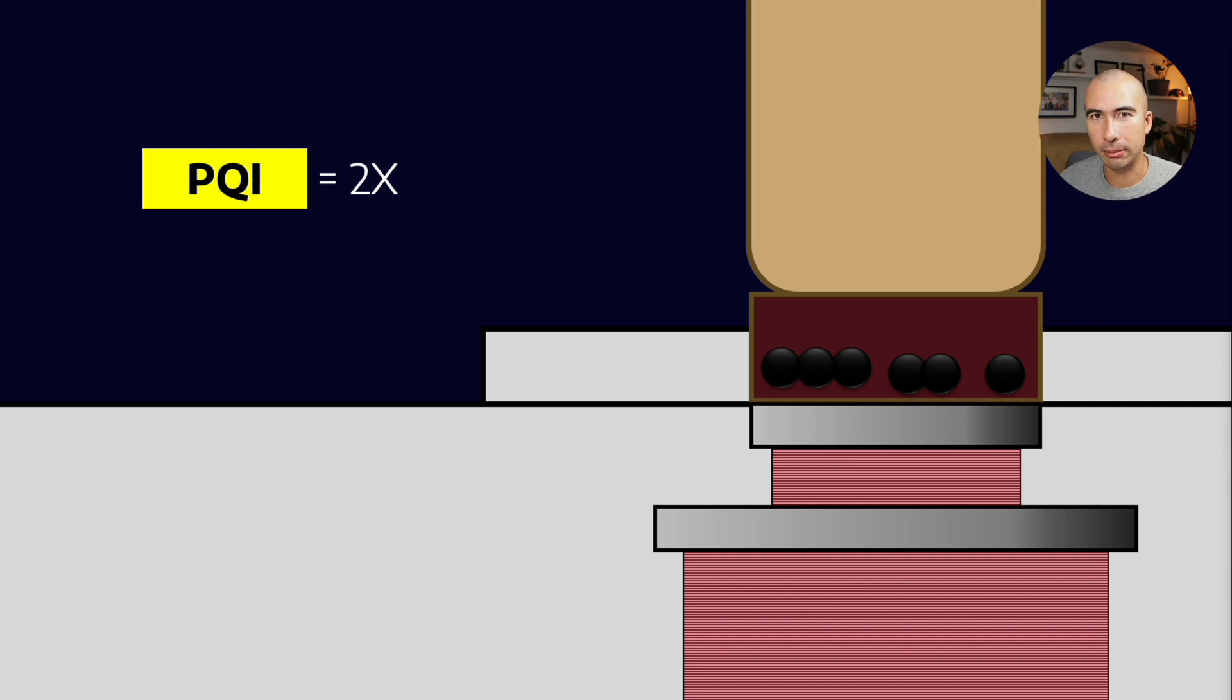If we double the number of particles, then PQ is going to double in kind. If we shrink those down to half their size, now I have six particles, but the same volume as the three large particles. So our PQ goes back down to X.